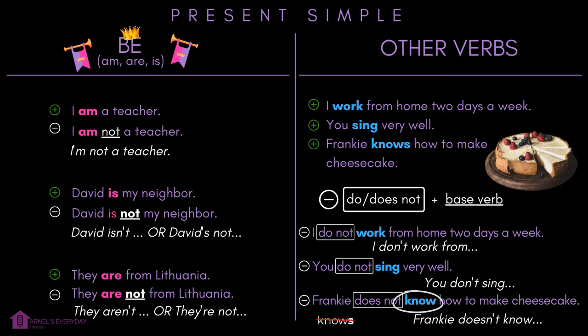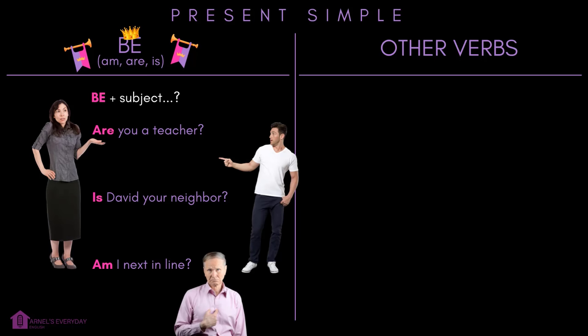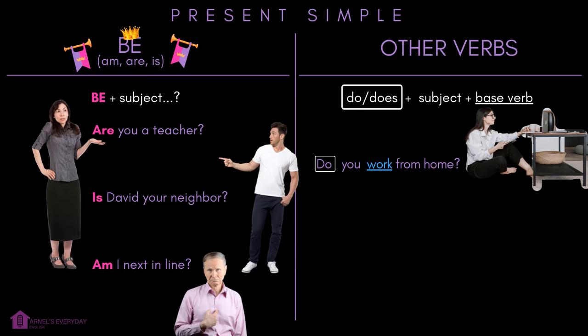The good news is questions are very similar. Be plus subject: are you a teacher? Is David your neighbor? Am I next in line? Do/does plus subject and base verb: do you work from home? Does Frankie know how to make cheesecake? Keep the base verb — not 'knows'.